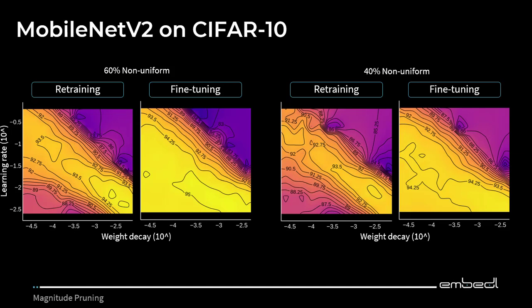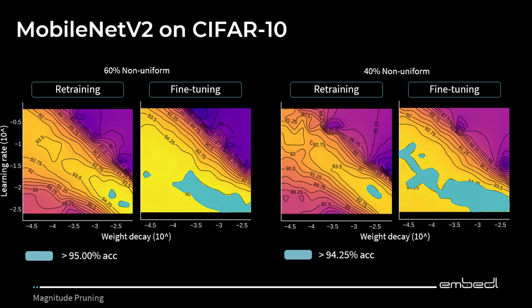We did the same experiments with MobileNet-V2, looking at non-uniform pruning at 60% and 30%. And here, once again, we got similar results: when we look at the best contour line, the area gets a lot larger when we do fine-tuning instead of retraining from scratch. And similarly for ResNet-56 on CIFAR-10, we were not able to improve peak performance, but the area of good parameters increases as well for the second contour line.